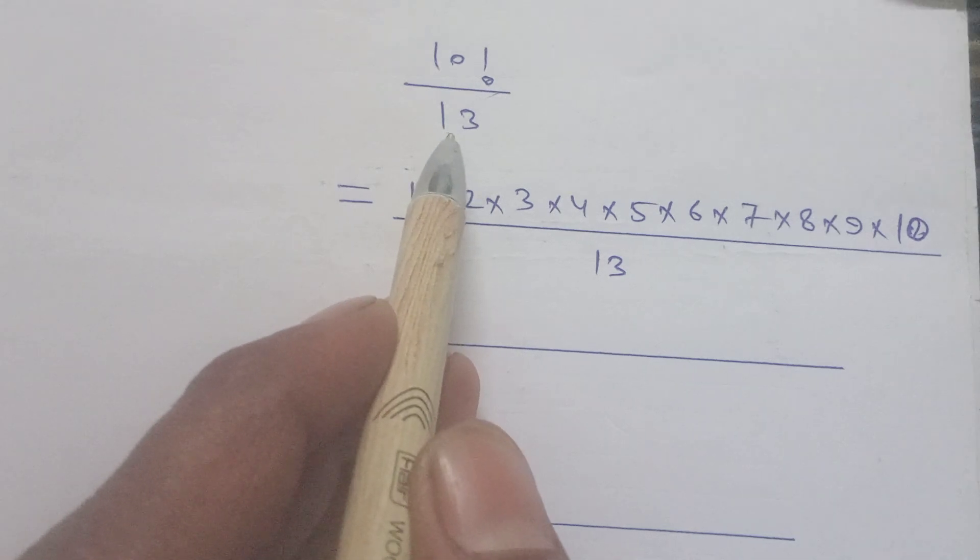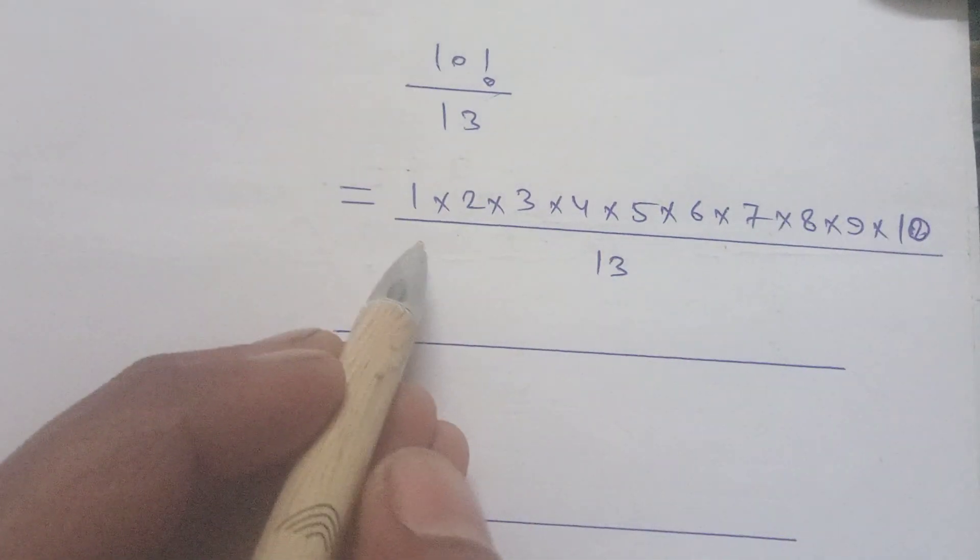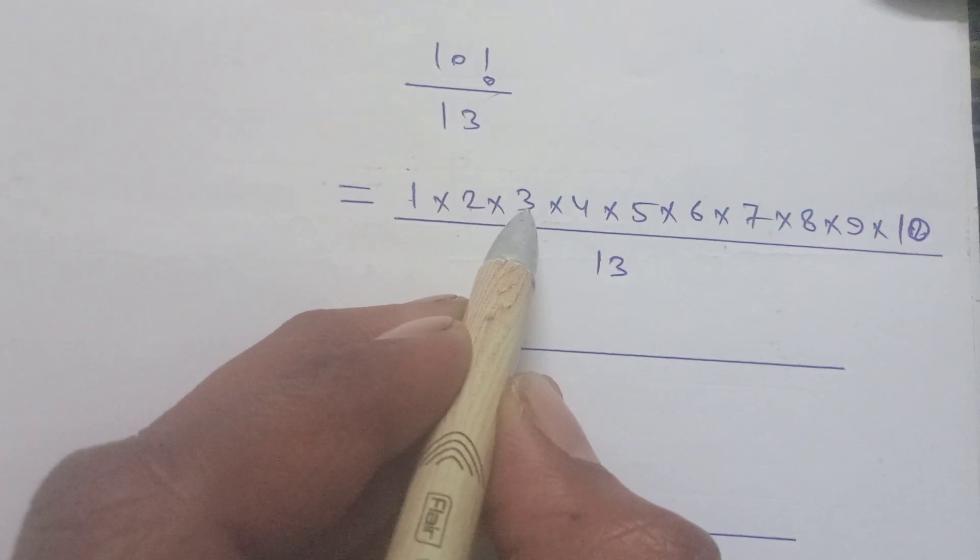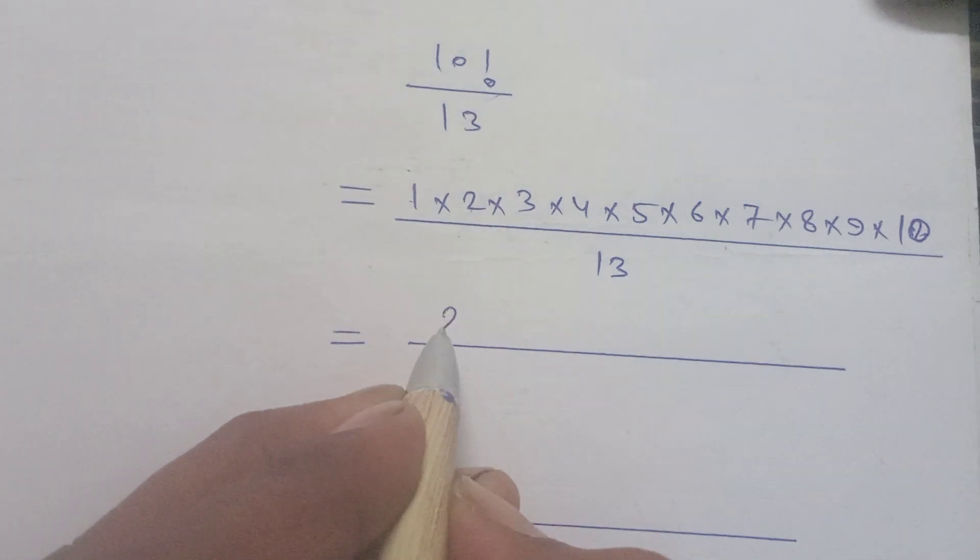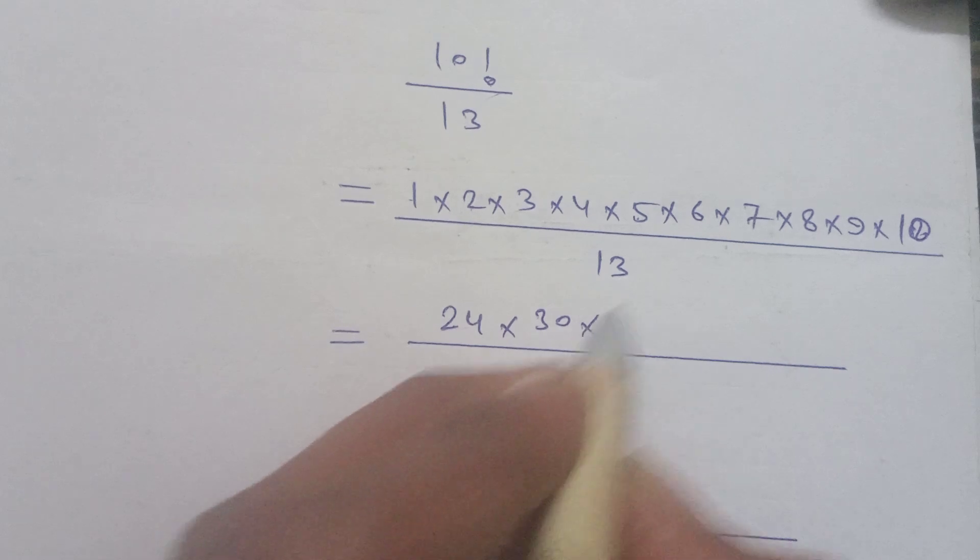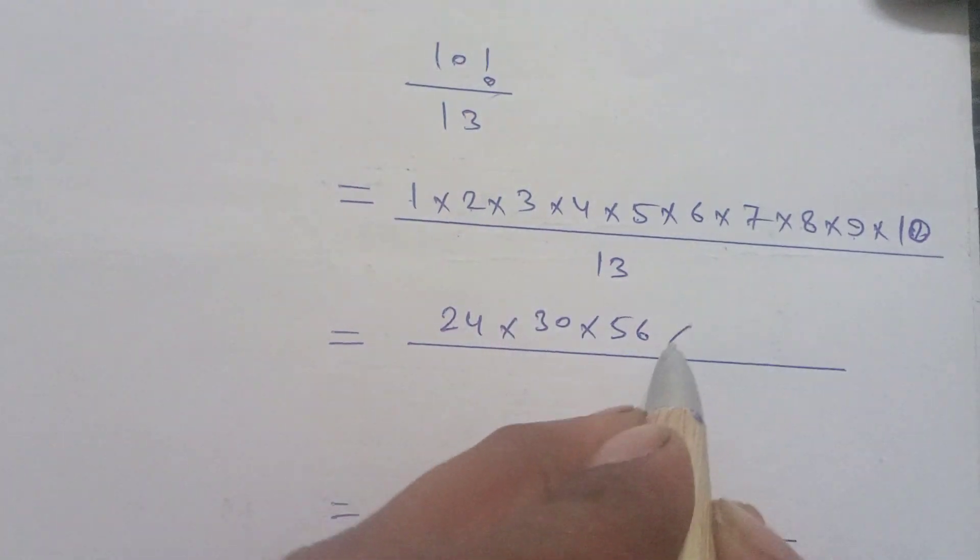Now we will discuss this problem by simple and basic method. 10! divided by 13, so 10! written in the form: 1 times 2 is 2, 2 times 3 is 6, 6 times 4 is 24, 5 times 6 is 30, 7 times 8 is 56, 9 times 10 is 90, and divided by 13.